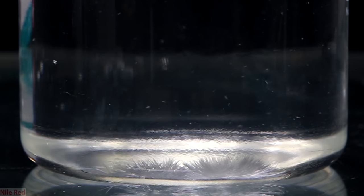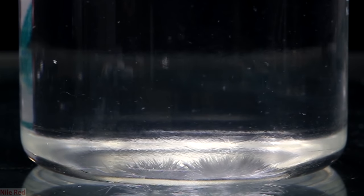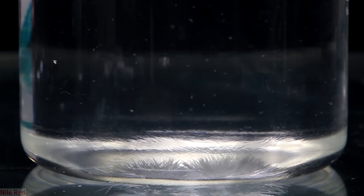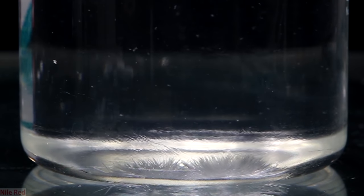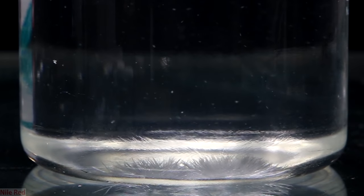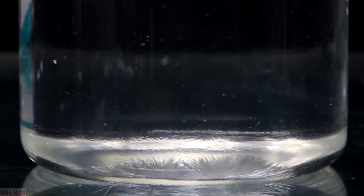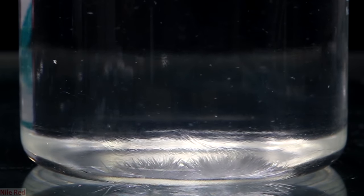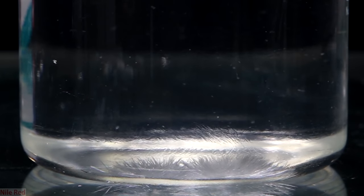After letting it cool for a little bit, some crystals will start to form. As the solution slowly cools, the solubility of urea will slowly decrease. As this happens, urea will slowly precipitate out of solution and will form crystals. At first it's slow but as time goes on more and more crystals will appear.